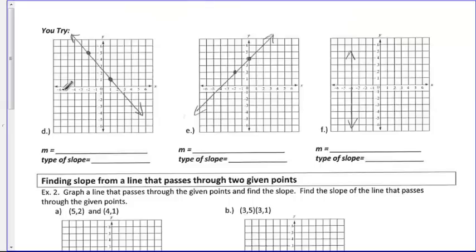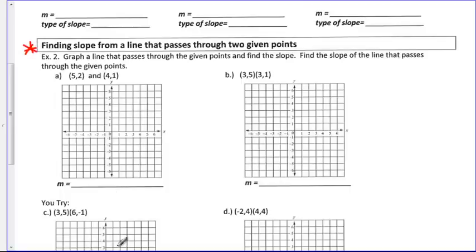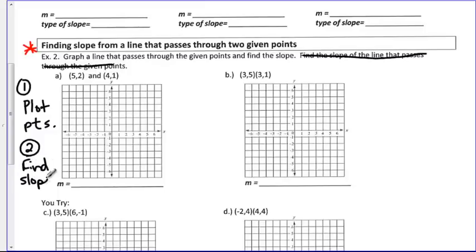Next examples. You try as you will try in class tomorrow. So we're going to go down to the third and final part of our notes today. And that's going to be find slope from a line that passes through two given points. Now just to make sure you're paying attention, the directions are written twice here. So obviously you don't need that second set. But graph a line that passes through two given points and find the slope. So what you're going to do here, really two steps, is plot your points. And the second step is find your slope.